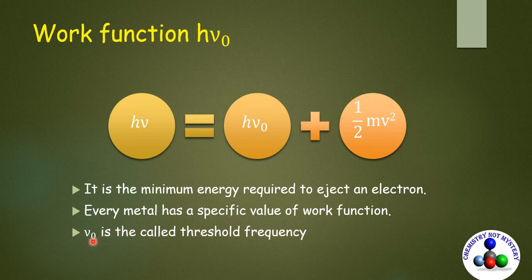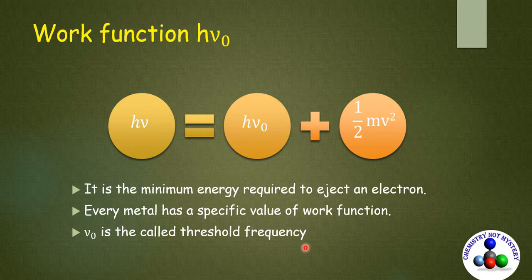ν₀ is called threshold frequency, below which the photoelectric effect is not observed. That means if you use a radiation having lesser frequency than the threshold frequency, its photon won't have enough energy to eject an electron. A photon must have energy equal to or more than that of work function. And extra energy is transferred to the electron in the form of kinetic energy.